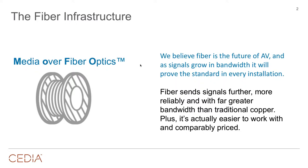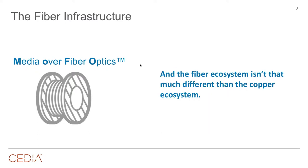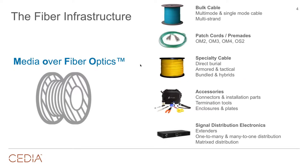Think of it this way: anything we use copper cabling for — that twisted pair Cat 5, Cat 6 cable — we can use fiber for, with one exception: sending power. Fiber does not transmit voltage. All the signals we're used to sending over copper we can now send over fiber. And the whole ecosystem, the way we design AV systems, is quite similar whether we're talking copper-based or fiber-based technology.